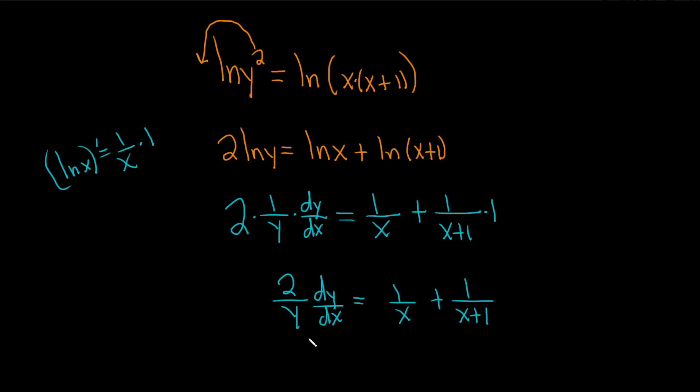And we're looking for dy dx, so I guess now we can just multiply both sides by the reciprocal, like this, y over 2, and then y over 2. I'm going to put a parenthesis here.